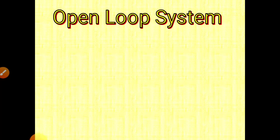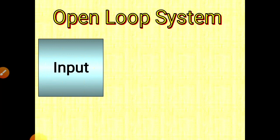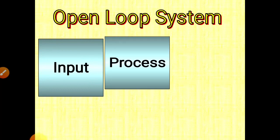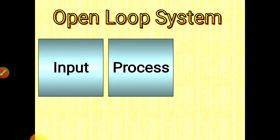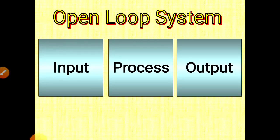So now this is Open Loop System. In any system we have to give some input. Suppose one process is there; to that process we require some input. So input is given to that process and then we get output. Input is given to process and process gives us some output.